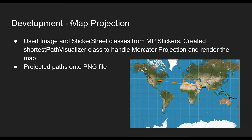For the map projection, we took advantage of the PNG image and sticker sheet classes used in class, mostly in MP Stickers. Before placing stickers, we needed to project the airport real-life locations onto pixel coordinates of the world map. There are many projections we could have used — for example, equirectangular — but we didn't go with that because many equirectangular projections online have issues with skewed dimensions. So we went with Mercator instead because it's easier to work with.